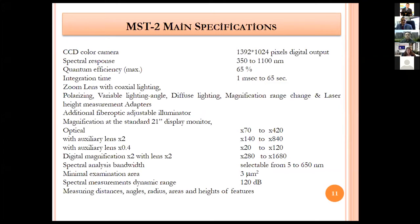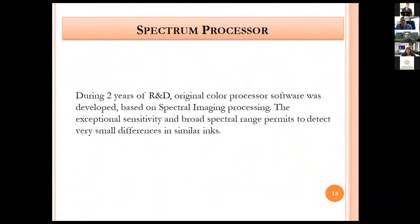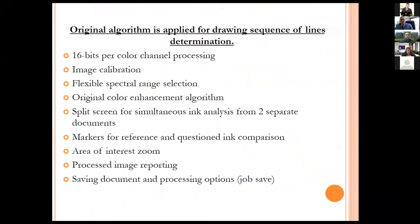These are the specifications of mainframe multispectral imaging. Counterfeit currency examinations using micro-spectral scanner and multispectral imaging systems with high resolution RGB color imaging are demonstrated. After extensive research of two years, optical color processor software was developed based on spectral imaging processing. The exceptional sensitivity and broad spectral range permits detection of very small differences in similar inks. The system applies original algorithms for drawing sequence of lines determination, 16-bit per color channel processing, image calibration, flexible spectral range selection, split screen for simultaneous sync analysis from two separate documents, markers for reference and questioned comparison, area of interest zoom, and document saving and processing options.